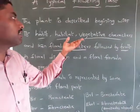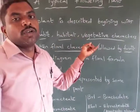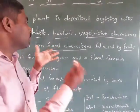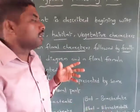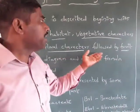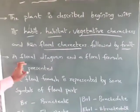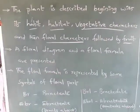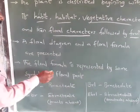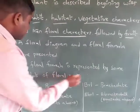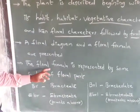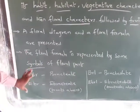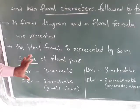The vegetative characters are nothing but the root, shoot, and the arrangement of the leaves. Then the floral characters describe how the flowers are arranged, how the inflorescence is structured, followed by the fruit. A floral diagram and the floral formula are also presented, with the floral formula represented by some symbols.